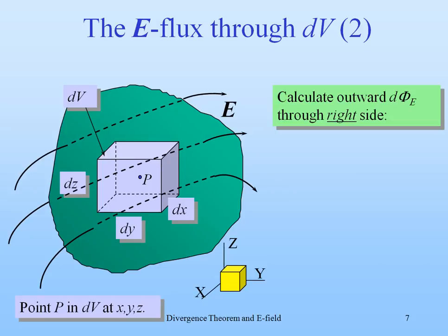Well, let's calculate the outward flux through the right side. That outward flux is the scalar product of the field strength and the normal to the surface. And for the right side, that's e in the x direction here, times the surface, and that's dx, dz. And it has to be taken at x, y plus dy over 2, z.